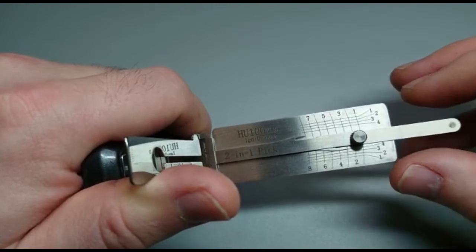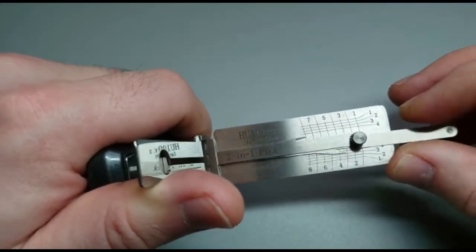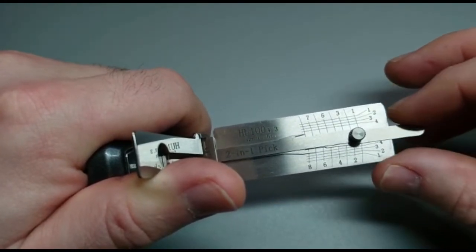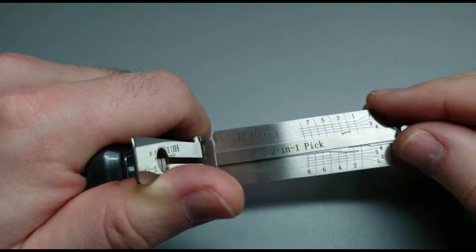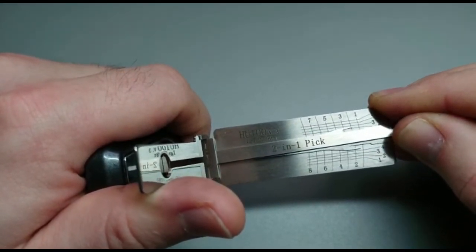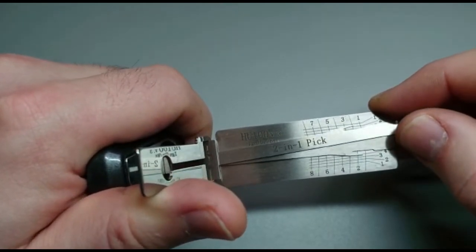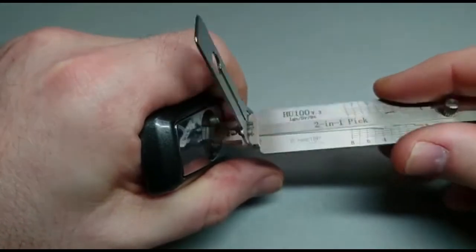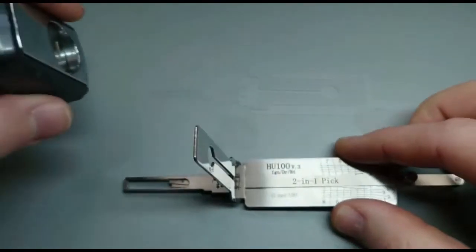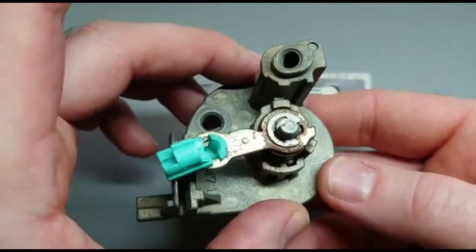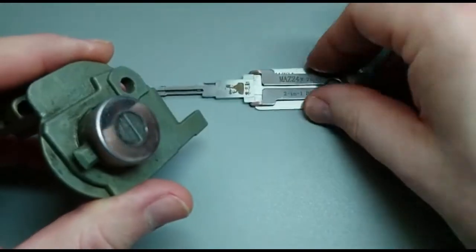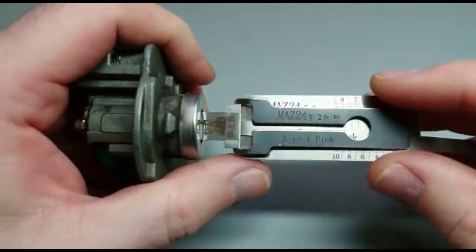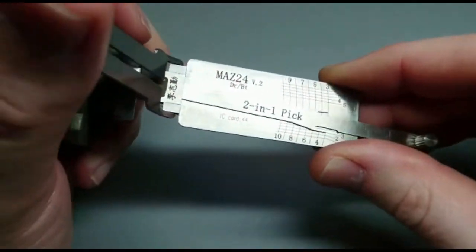There's about 80 different Lishi picks and like I said ones like the HU66 open 6 or 7 different cars and the HU100 some open just one. You know roadside recovery companies absolutely love these picks. I've never known a lock pick to be so endlessly effective. They just work. The only time I've seen a Lishi pick fail in the last 15 years since I've been in this game was when the lock turned out to be faulty. So take from that what you want.